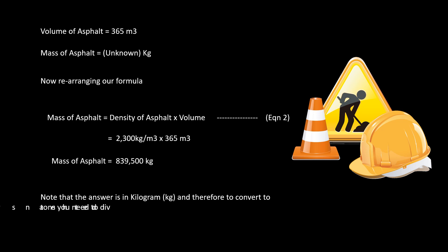Rearranging the formula to find mass, we have: mass of asphalt equals density times volume — equation two. Therefore, 2300 kilograms per meter cubed multiplied by 365 cubic meters gives us 839,500 kilograms. Since this answer is in kilograms, to convert to tons we divide by 1000, giving 839.5 tons of asphalt.